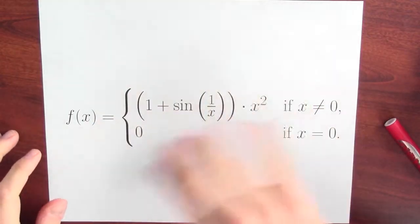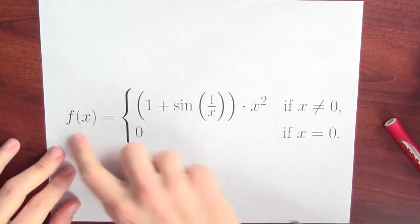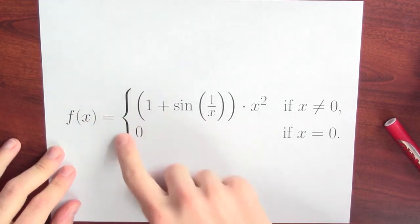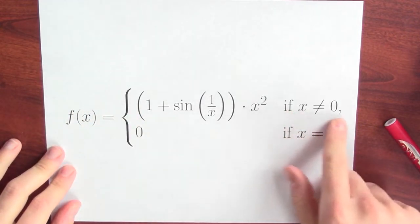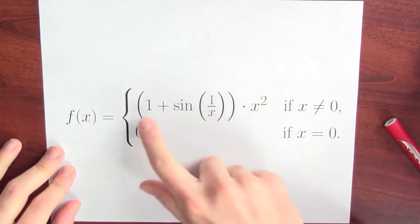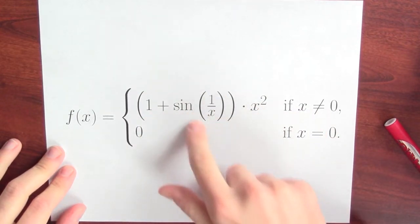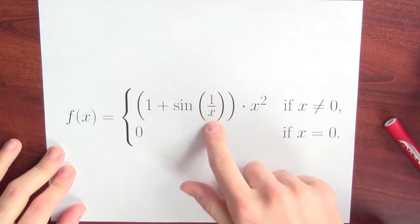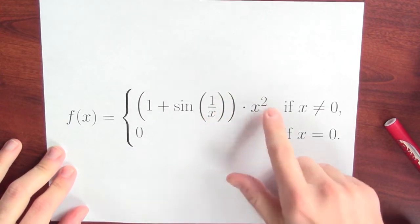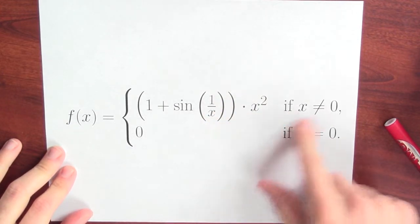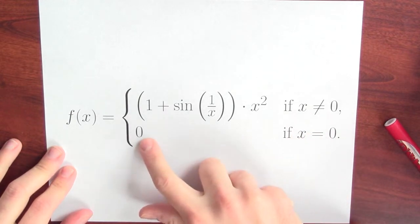For instance, consider this somewhat pathological example. I'm going to define this function f as a piecewise function. If the input's non-zero, I'm going to do this: 1 plus the sine of 1 over x, which makes sense since x isn't 0, times x squared. And if the input is 0, the function's output will also be 0.